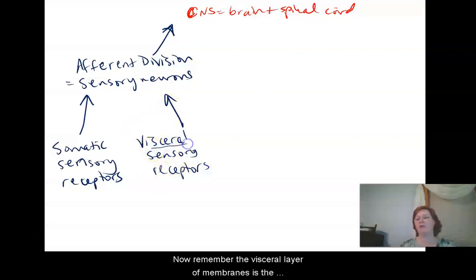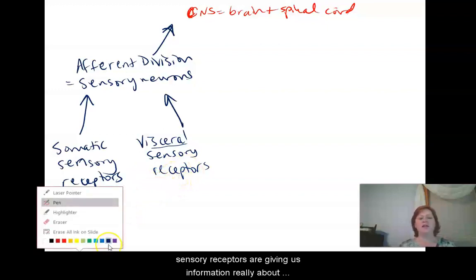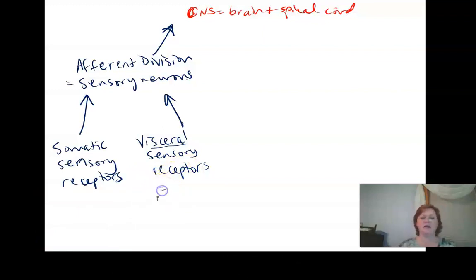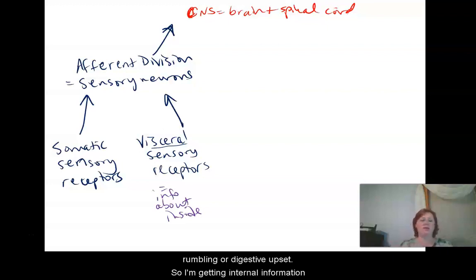Now remember, the visceral layer of membranes is the one that's tight to the organs, so your viscera are your guts. So if you think about it that way, then your visceral sensory receptors are giving us information really about what's going on inside. So these are receptors that are going to tell you if your blood pressure is too high or too low, if your blood sugar is too high or too low, if your muscles are contracting of the uterus and you can feel cramps, or a smooth muscle around the digestive tract and you can feel kind of stomach grumbling or digestive upset. So I'm getting internal information from these visceral receptors.